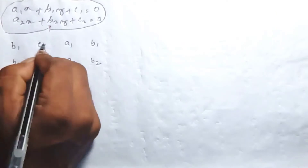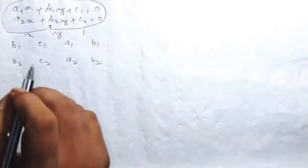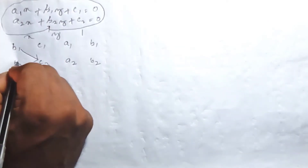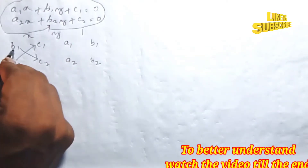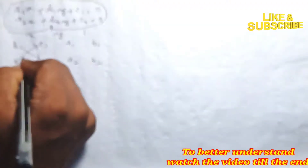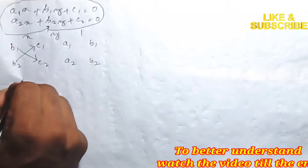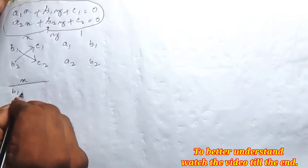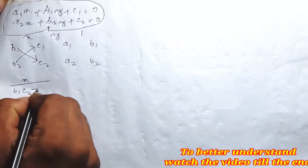We set up arrows for the cross-multiplication. For variable X, we look at b1 and c2, and for variable Y we use b2. Cross-multiplication gives us the values by crossing the coefficients in the arrangement, using a minus sign between the products.